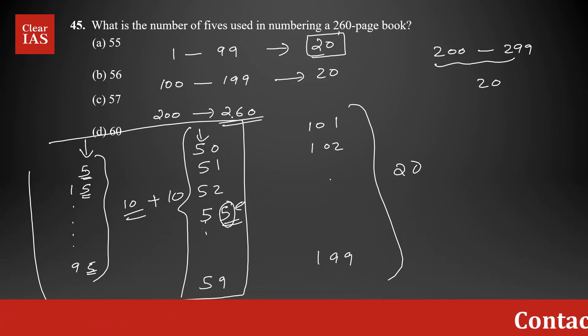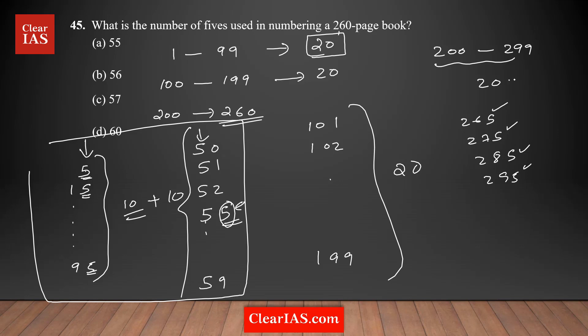So you need to remove the remaining 5s: that is 265, 275—one 5 from here, one 5 from here—285, 295. There are four 5s you need to remove, so from 20 removing 4, you have 16 5s in this group.